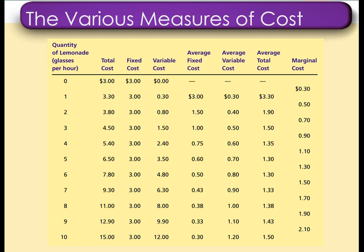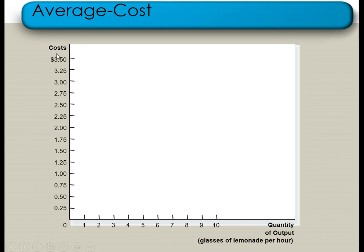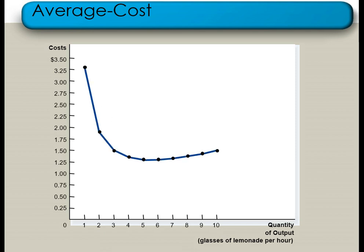Now we will draw the curve for average cost, or average total cost. On the y-axis we have taken the cost value, and on the x-axis we have taken the number of units being produced. When producing one unit, average total cost is plotted at this point; two units at this point; three units at this point. These dotted points are taken from the previous table. After that, we simply join these points, which gives us the average total cost curve.